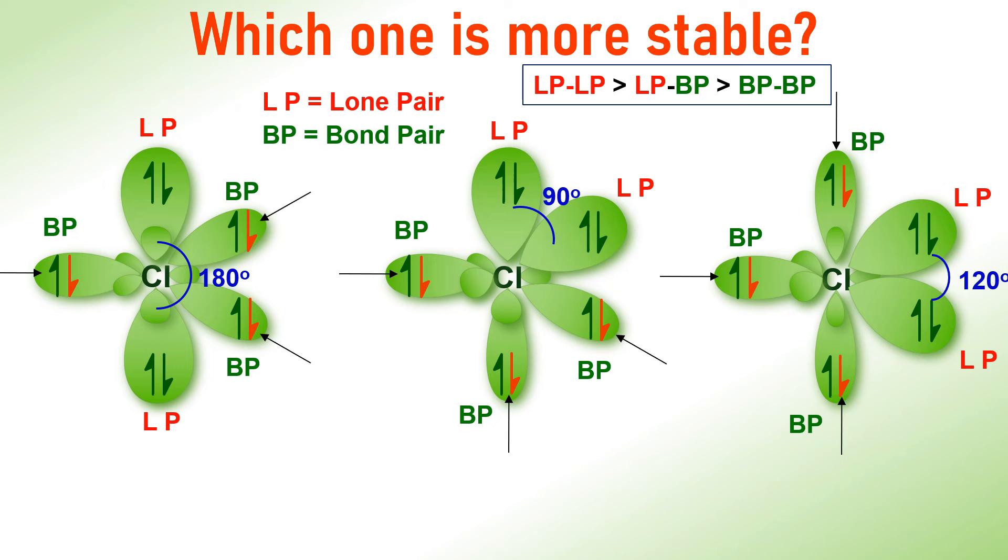Hence, just based on these repulsions, the left hand arrangement must be more stable followed by the right hand side arrangement. However, we should also take into account repulsions between lone pairs and bond pairs to arrive at the final conclusion.